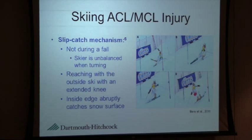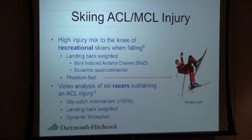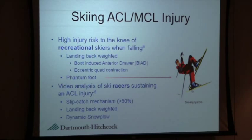Another study was done on ski racers specifically, and they identified three mechanisms in this population. One is called the slip-catch mechanism, which happens in about 50% of ski ACL-related injuries in this population. They also identified the landing back-weighted mechanism, and something called a dynamic snow plow, where the uphill ski catches the inside edge, forcing the person into internal rotation of the knee — mimicking basically when you're doing a snow plow down the slope.